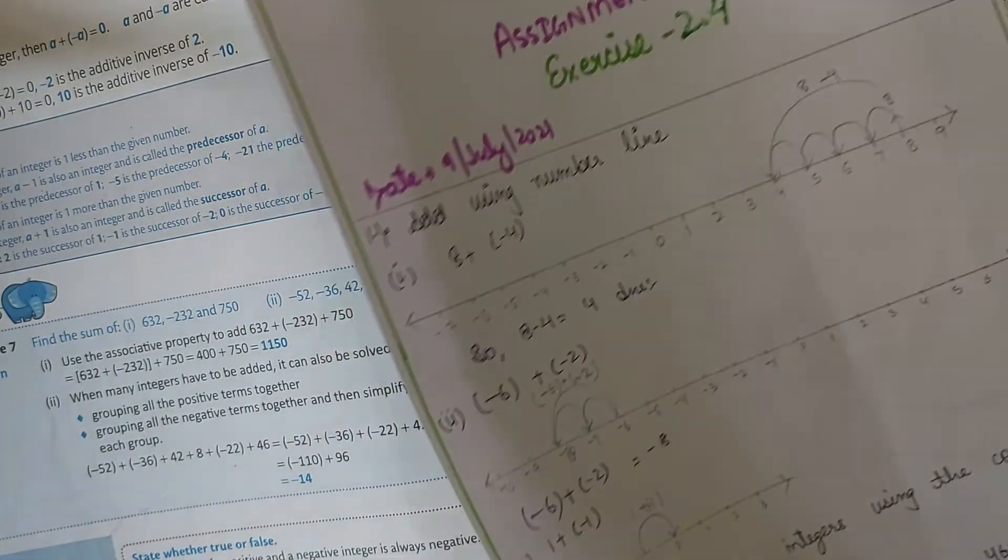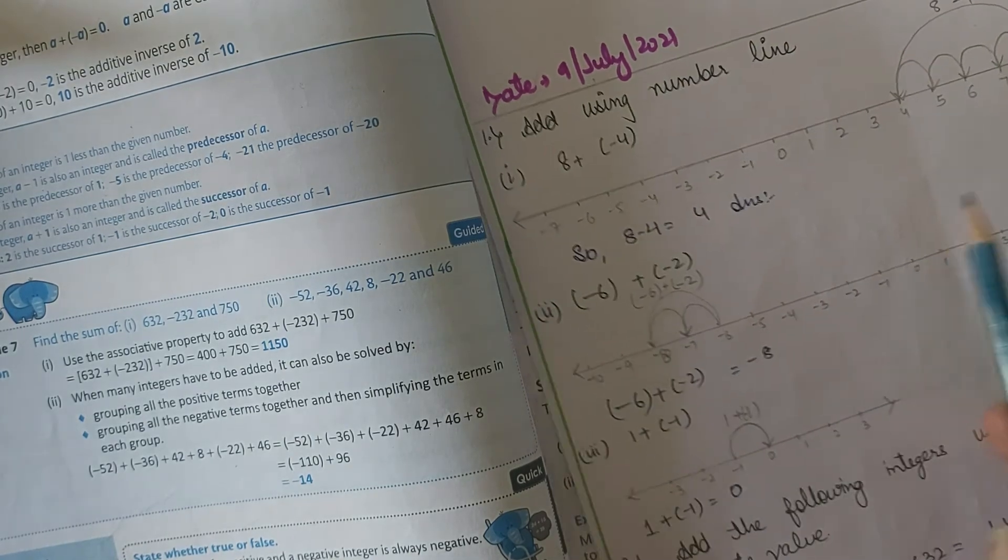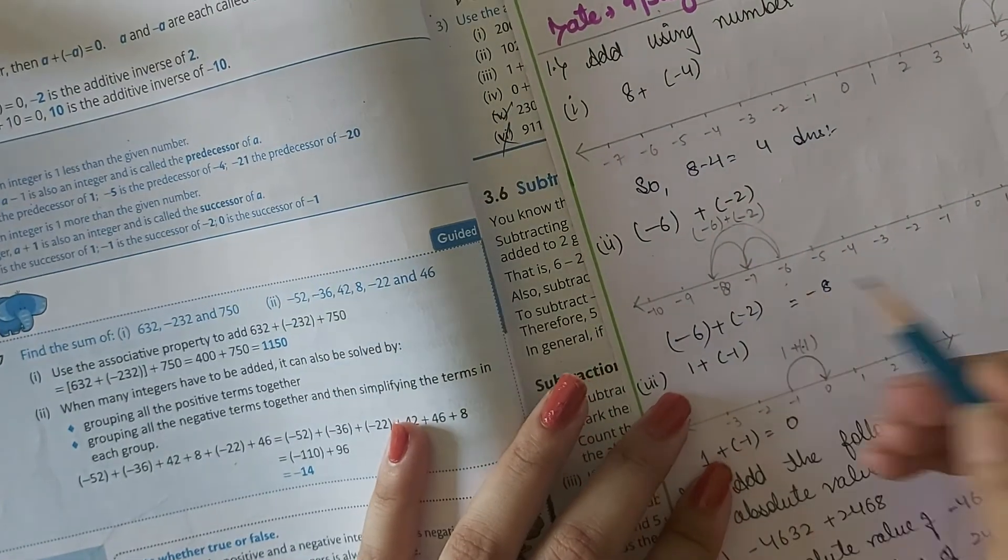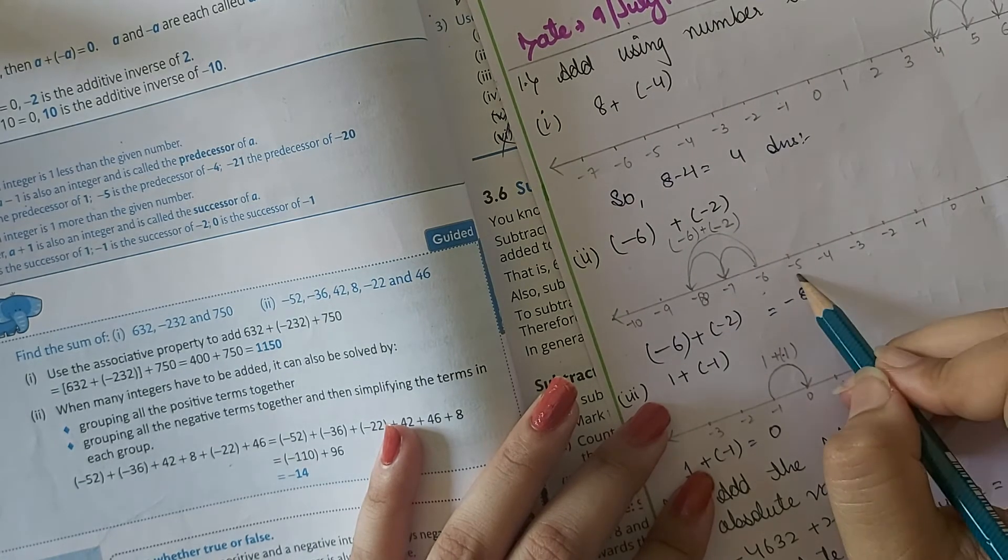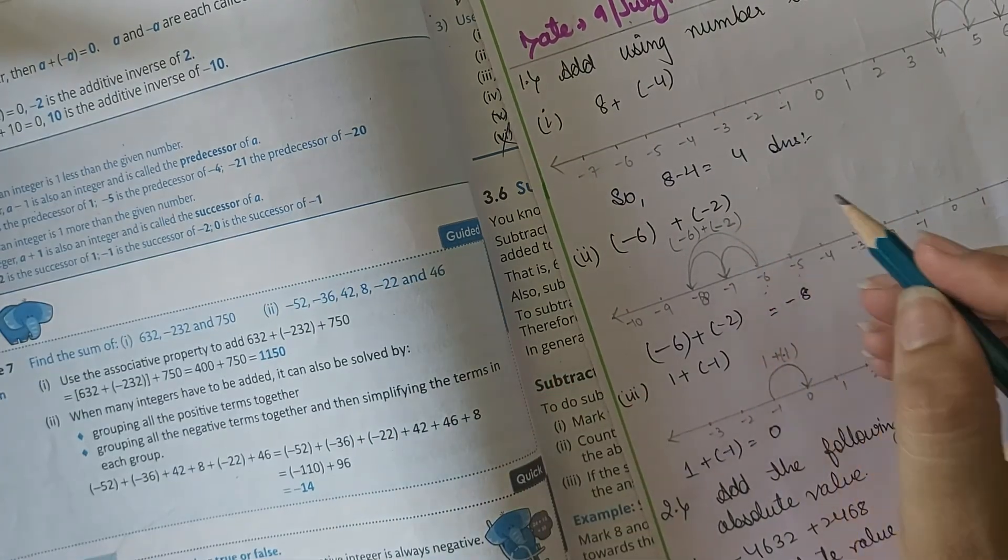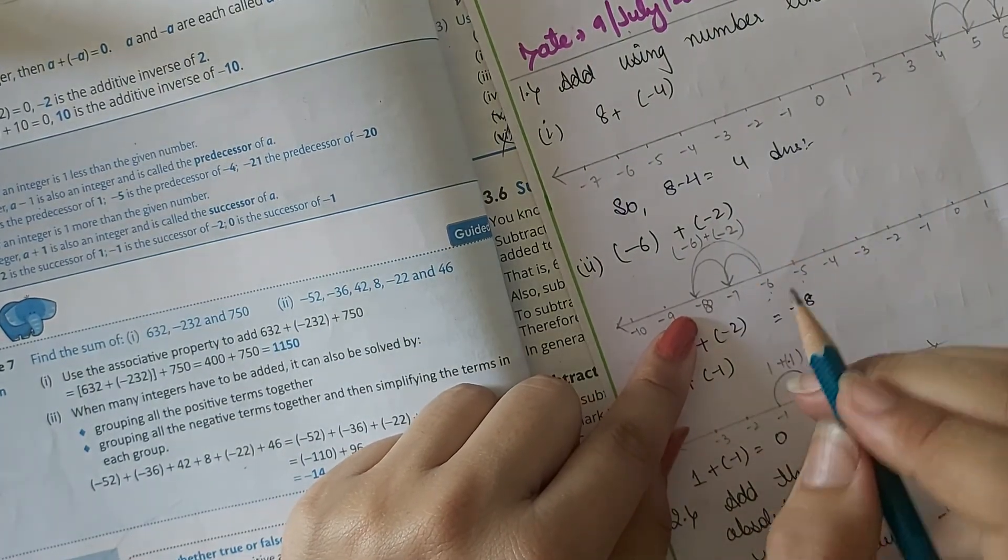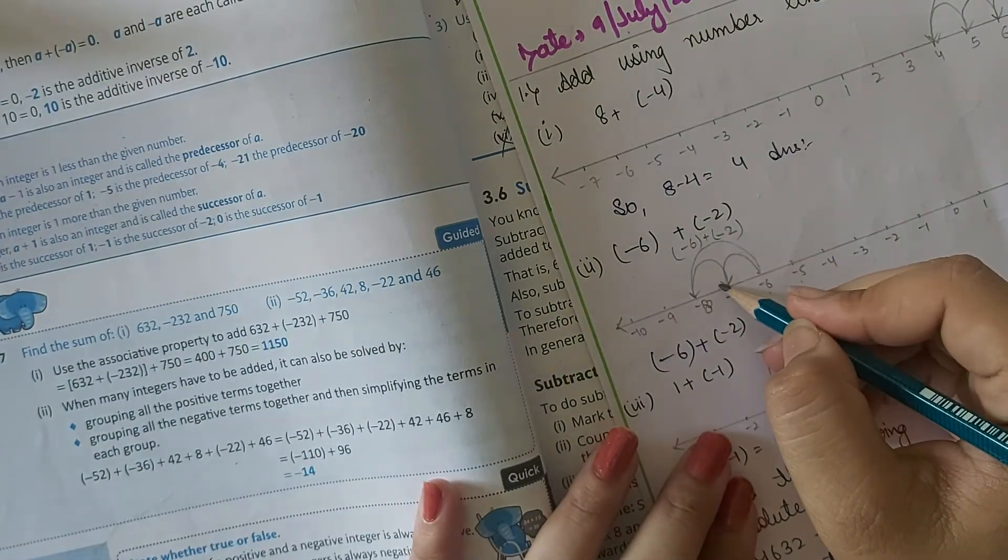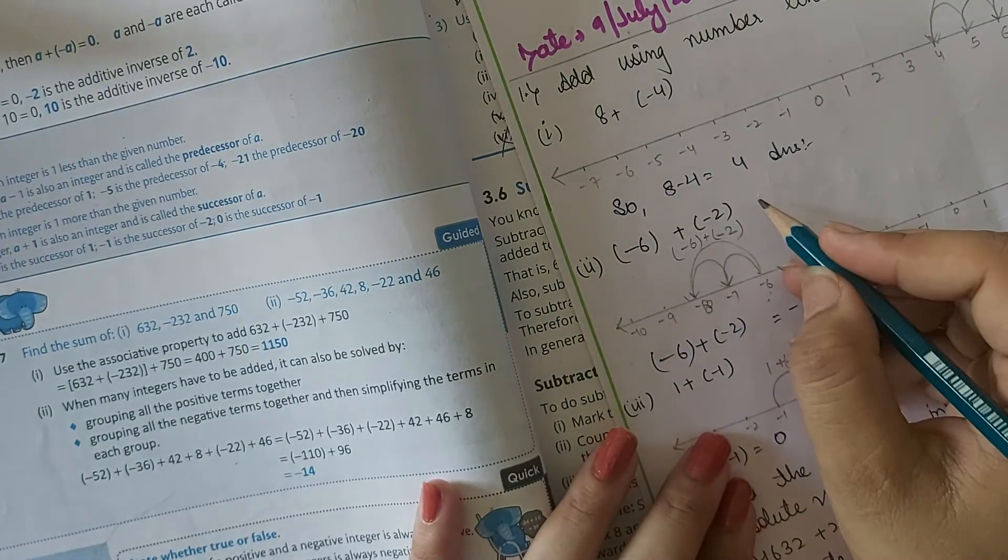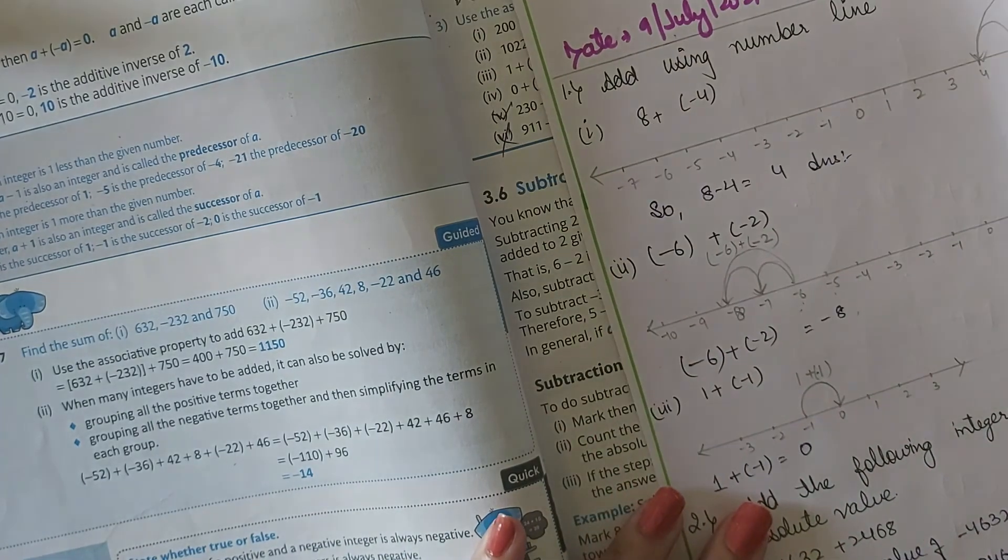Moving to next question: minus 6 plus minus 2. So minus 6 is here. That is 0, minus 1, minus 2, minus 3, minus 4, minus 5, minus 6. Now what did they ask? They said add minus 2. When we are adding a negative number, always move to the left hand side. That is minus 7, minus 8. So our answer would be minus 8.